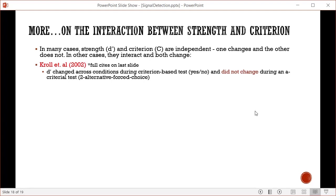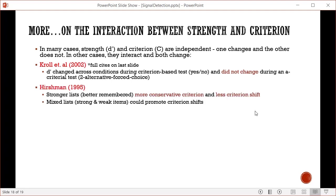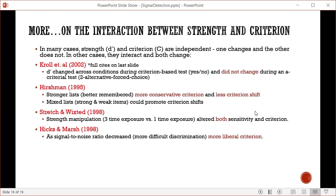But there are cases where they interact and both values change. Crowell found D prime changed across conditions with yes-no judgment but didn't change with a forced choice test where you compare two probes. Hirschman showed stronger lists had more conservative criteria with less willingness to shift, while mixed lists of strong and weak items promoted criterion shifts. Stretch and Wixted found that strength manipulation based on number of exposures altered both sensitivity and criterion. Hicks and Marsh showed that as signal-to-noise ratio decreased with more difficult discrimination, you get more liberal criteria.